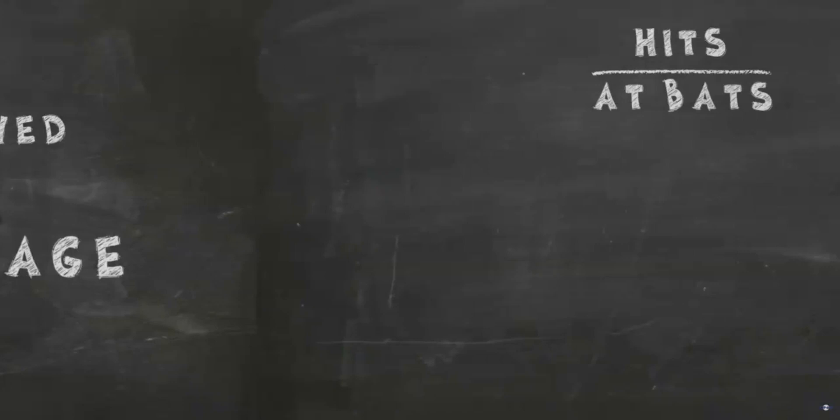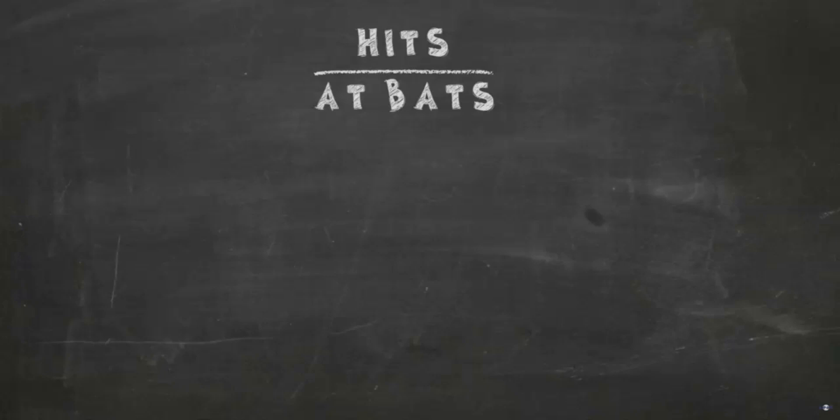Let's start with how batting average is calculated. It's simply the number of hits over the number of at-bats. A batting average is rounded to three decimal places and is read as, for example, 315, not .315. A hit is credited any time a batter hits the ball in fair territory and reaches first base safely without the aid of a fielding error or a fielder's choice.